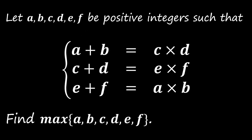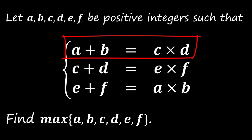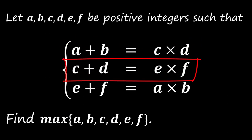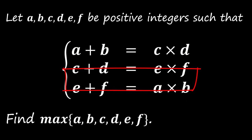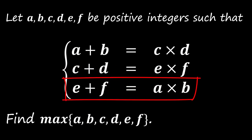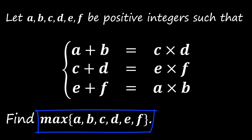For today, let's look at this interesting number theory question — it is suitable for beginners. Let a, b, c, d, e, f be positive integers such that a plus b equals c times d, c plus d equals e times f, and e plus f equals a times b. You are asked to find the maximum value of a, b, c, d, e, f. Please have a good try before you look at the answer.